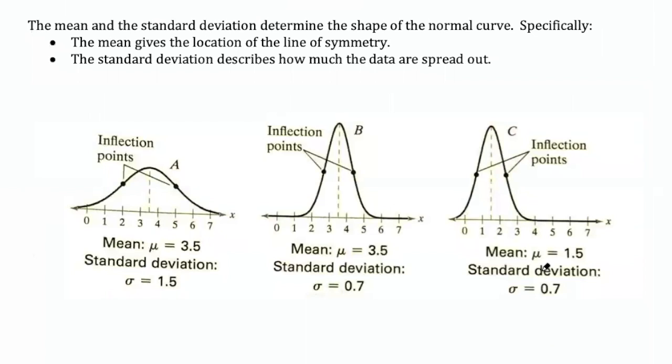It's the mean and the standard deviation that determine the shape of the normal curve. Specifically, the mean is always going to tell you the location of the line of symmetry, because the mean is going to be in the middle of that curve. The standard deviation describes how much the data are spread out. So here you can see in our first example, a mean of 3.5. So you'll find the line of symmetry here at 3.5. The standard deviation is 1.5. And we know that because we look for that point where the curve goes from curving downward to curving upward. And that value is 1.5 units away from the mean at 3.5.